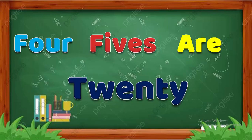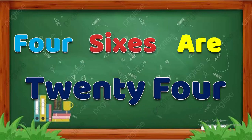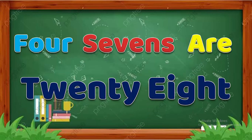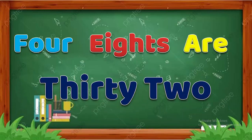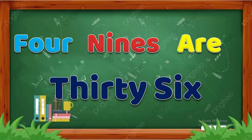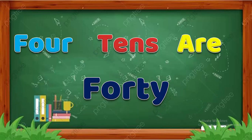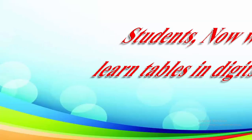Four fives are twenty. Four sixes are twenty-four. Four sevens are twenty-eight. Four eights are thirty-two. Four nines are thirty-six. Four tens are forty.